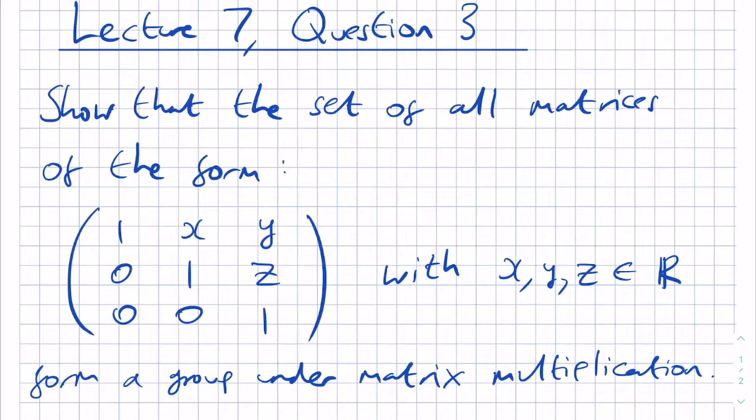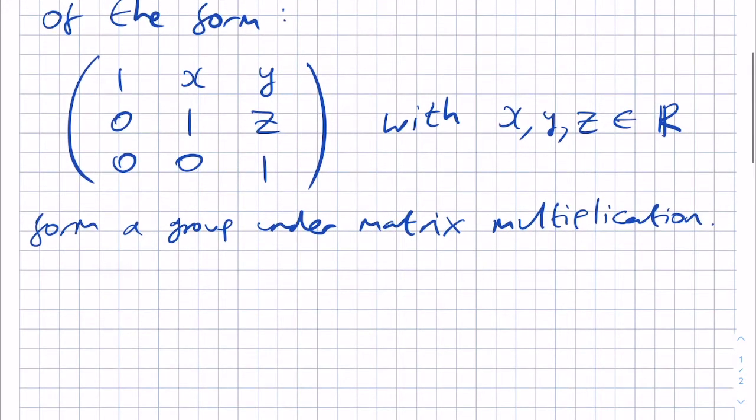which, out of interest, is called the Heisenberg group. In order to show that the set of all of the matrices of this form form a group under matrix multiplication, we need to check all of the conditions that we need for this to be a group.